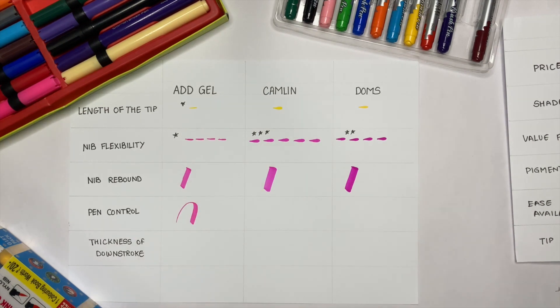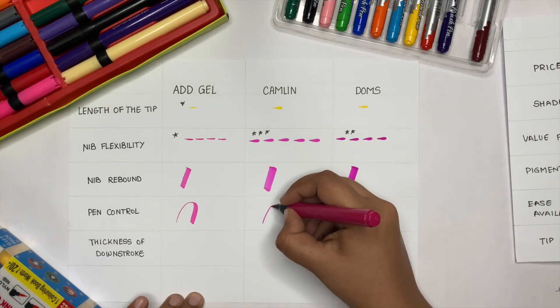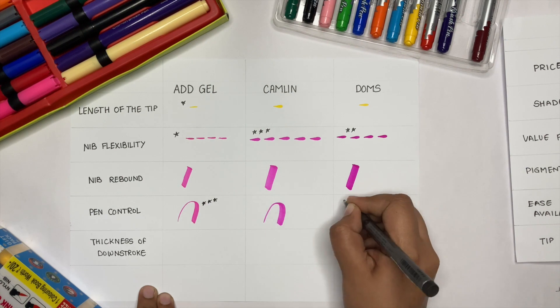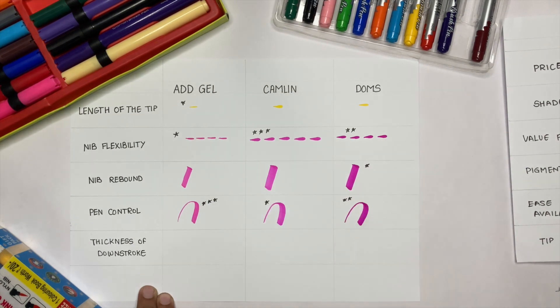Pen control is the ability to create thick and thin strokes easily. As I have said before, ADD Gel brush pens have medium flexibility. This makes them easier to control as compared to Camlin and DOMS.